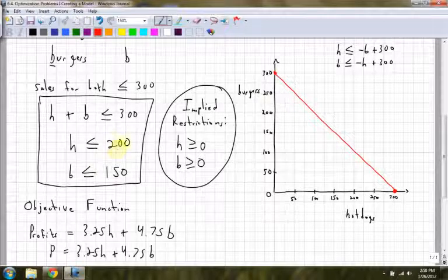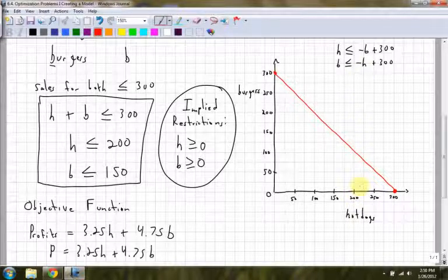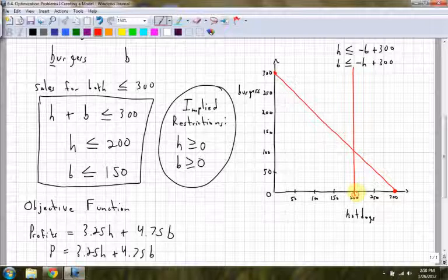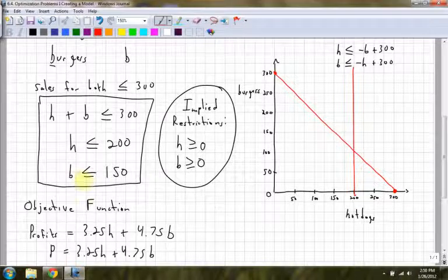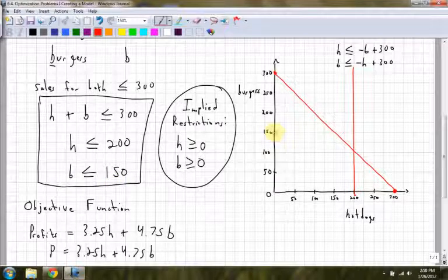Alright, so my H is going to be less than or equal to 200. So on my hot dogs, here at 200, I'm going to have a straight up and down line. Again, use a ruler and draw a straight line all the way down. And the last one, B is less than or equal to 150. So 150 is up here on my burger axis. And again, draw a straight line for that one.